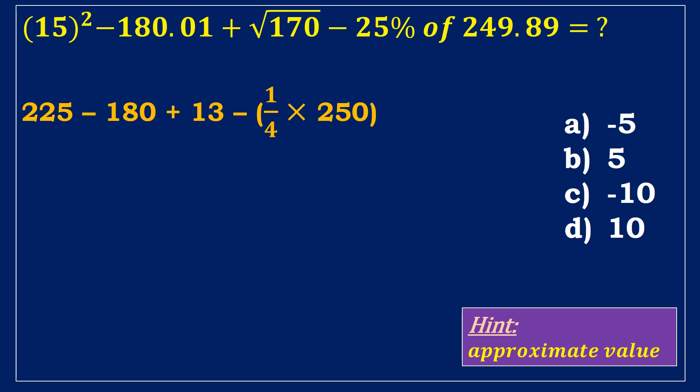Then perform calculations. The equation becomes 225 minus 180 plus 13 minus 1 fourth of 250. 225 plus 13 is 238. Then subtract 180 from 238 results 58. 1 fourth is nothing but half of the value and half of the value again. Half of 250 is 125 and half of 125 is 62.5. Then, subtracting 62.5 from 58 we obtain minus 4.5. This is an approximate value. The nearest value in the answer is minus 5.